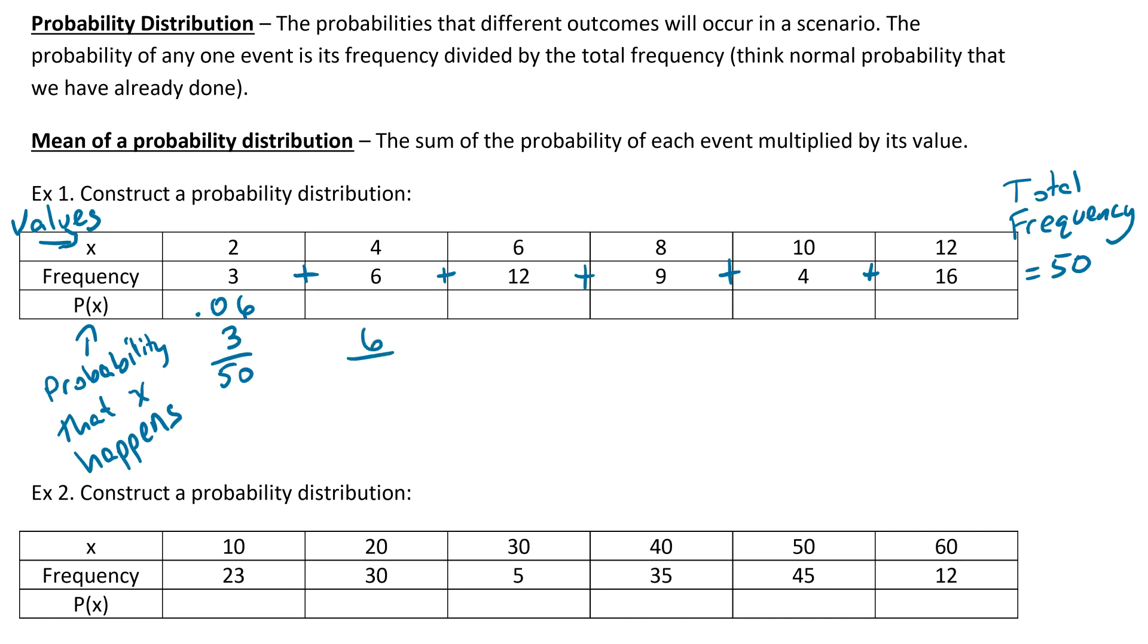Then 12 out of 50. 9 out of 50 will be 0.18, 4 out of 50 is 0.08, and lastly 16 out of 50 will be 0.32. And that's it. That's our entire probability distribution, so it's just the values up top and then the probability that those values happen, which we calculated in this row.